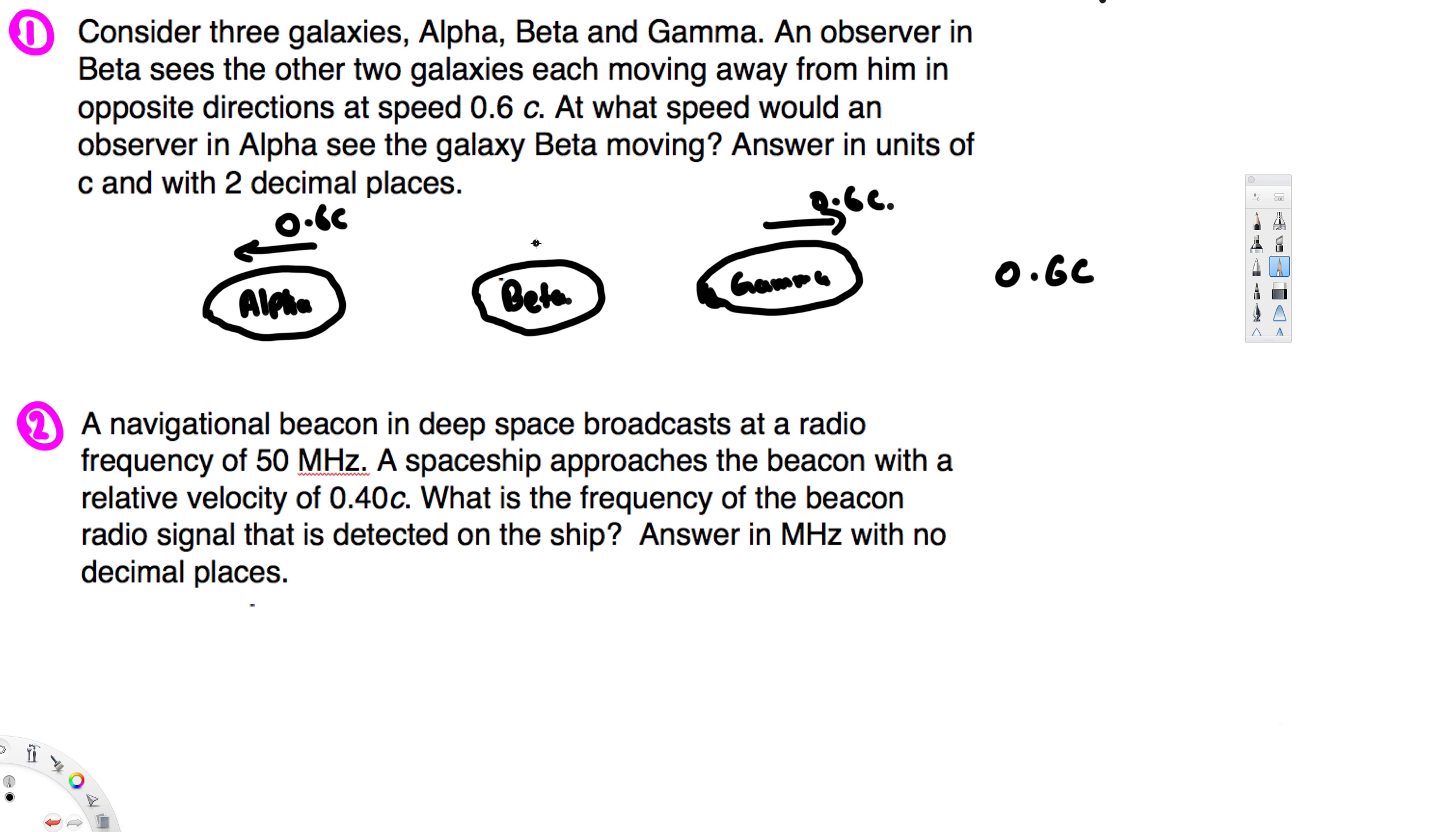So when the observer from Alpha watches this Beta, it's going to appear that this is also moving with 0.6c, right. And let's look at the second question.